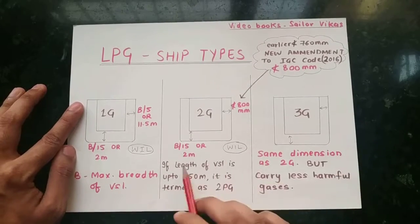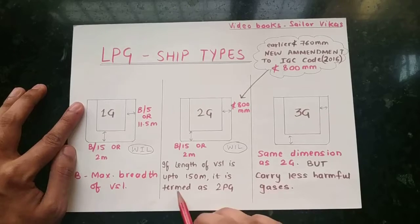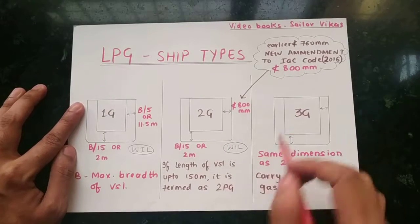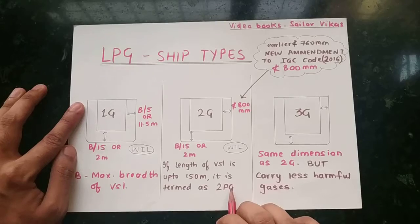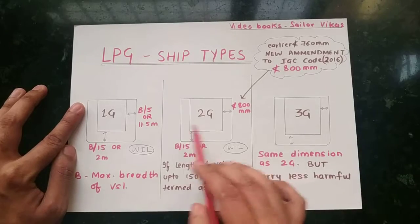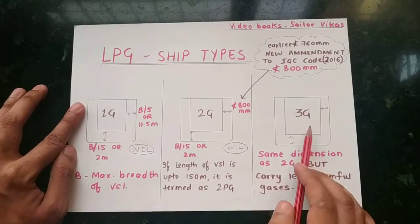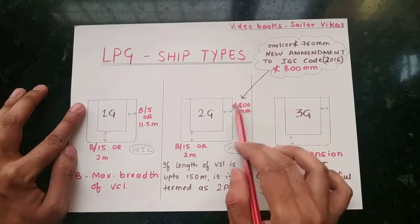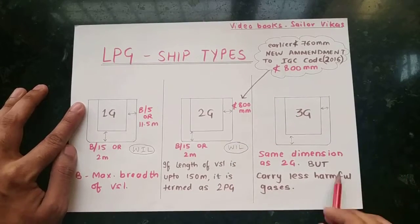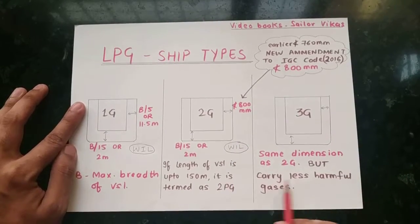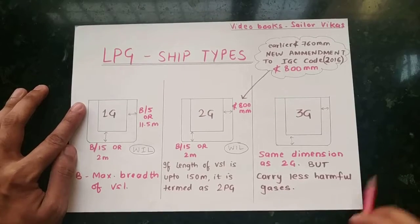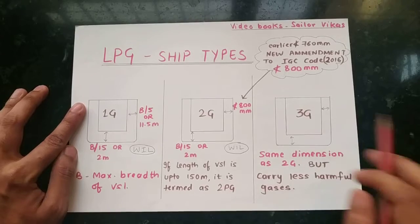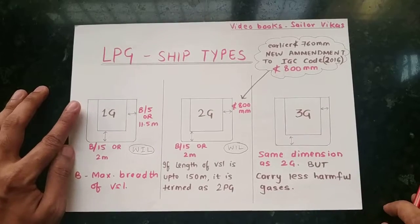If the length of the vessel is up to 150 meters, it will be termed as 2PG. For 3G, the dimensions will be the same, and for the side it will be not less than 800 mm, but it will carry less harmful gases. So this covers the LPG ship types: 1G, 2G, 2PG, and 3G.